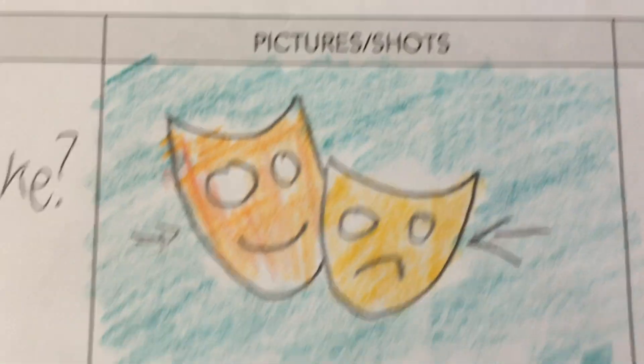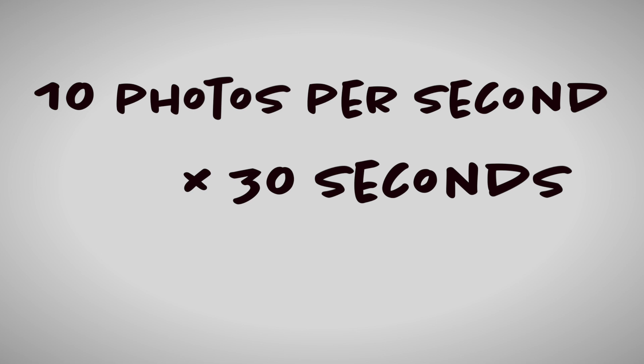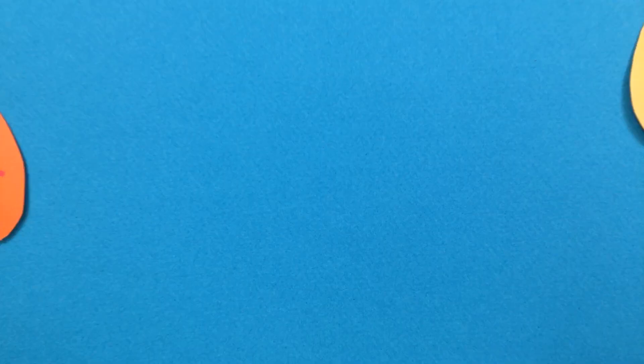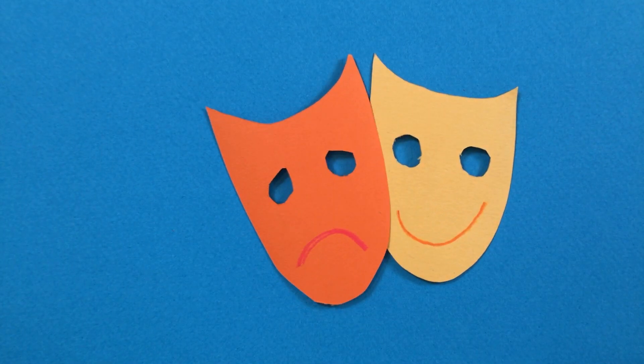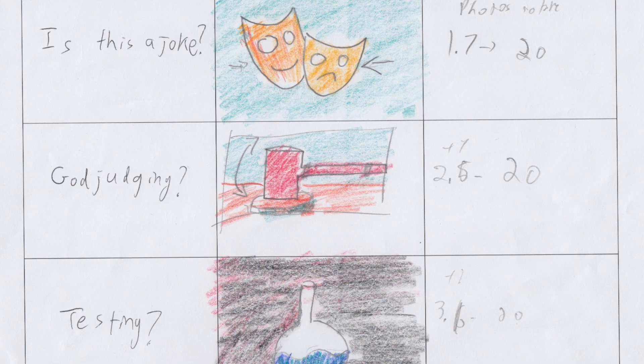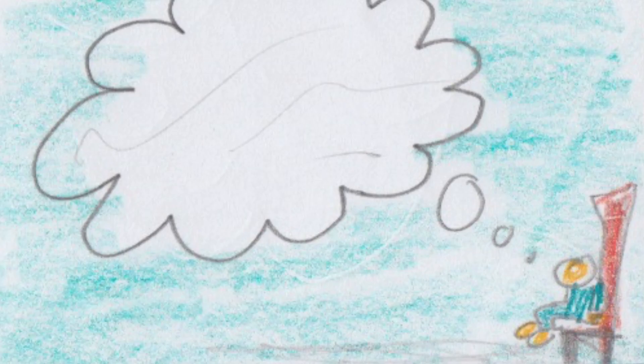Your story reel shows you how long you'll spend on each shot. It's your timing guide. If you have a 30-second short, you and I both know it will take 300 photos to get there. This is a photo, this is a photo, etc. But how do you know how long to spend on each of the scenes you drew in your split script for each shot?